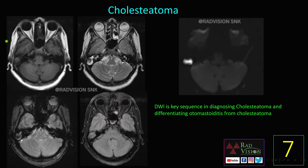The seventh case: you can see T1 hyperintense and T2 hyperintense areas in the right mastoid air cells, with subtle blooming on GRE. The key sequence is DWI — whenever you see restricted diffusion on DWI in the middle ear or mastoid area, definitely suspect cholesteatoma. DWI is a key sequence in diagnosing cholesteatoma and helps differentiate mastoiditis from cholesteatoma.